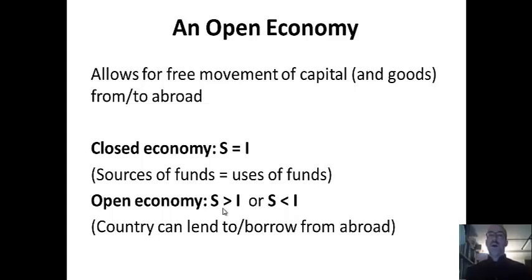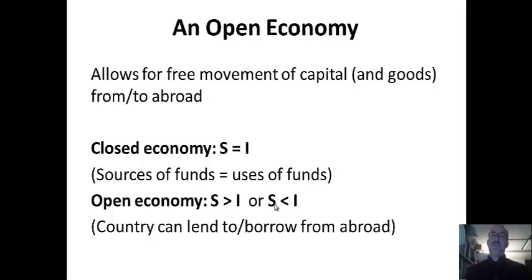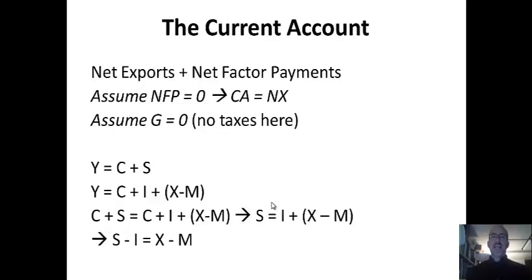Welfare can actually increase because some countries — like Germany in the real world — save more than they can afford to invest. Germany has a lot of capital, so it can send capital to other countries. Then you can have a borrowing country whose own internal savings is low. How do they fuel that investment? They do it through borrowing from abroad. So some countries are lenders and some countries are borrowers.